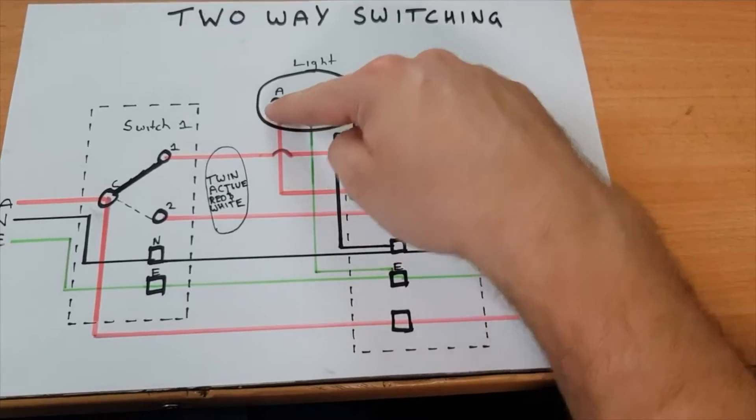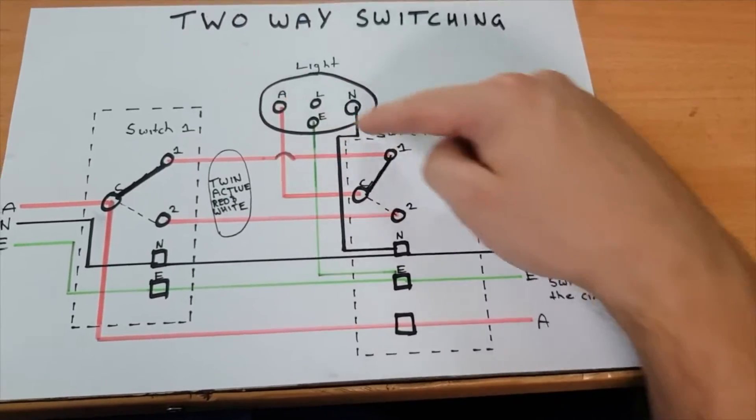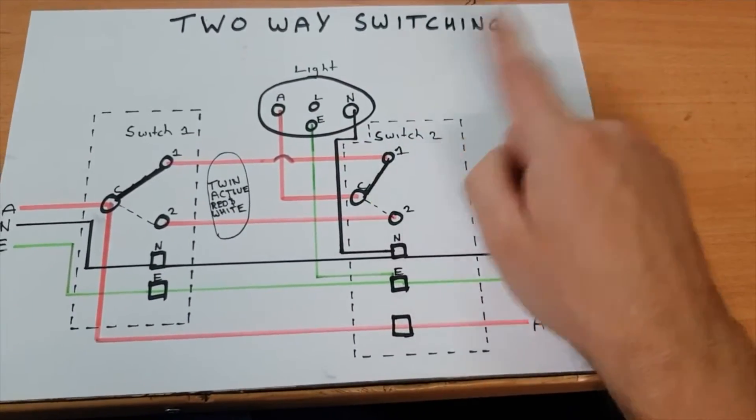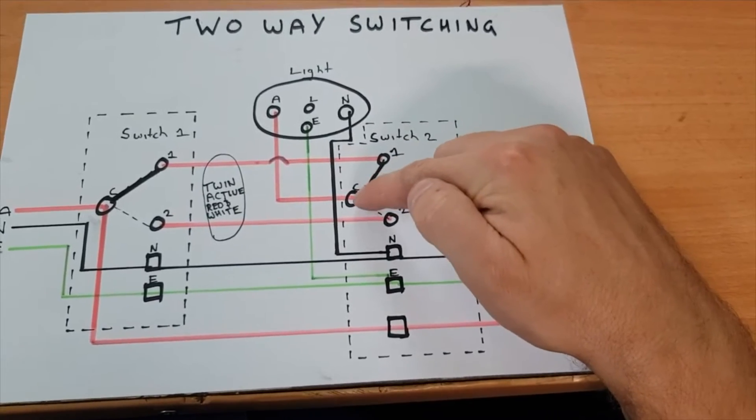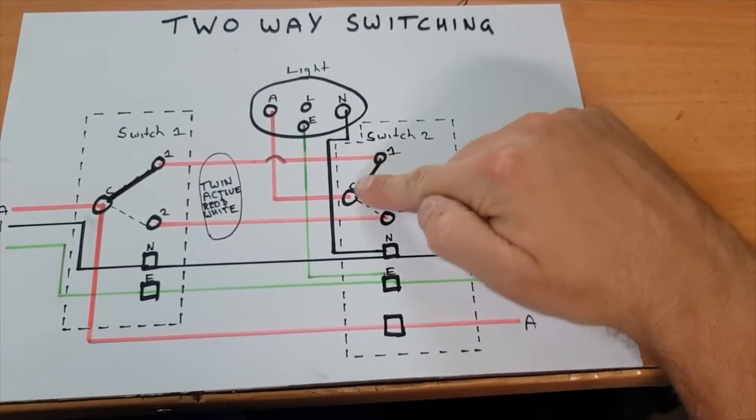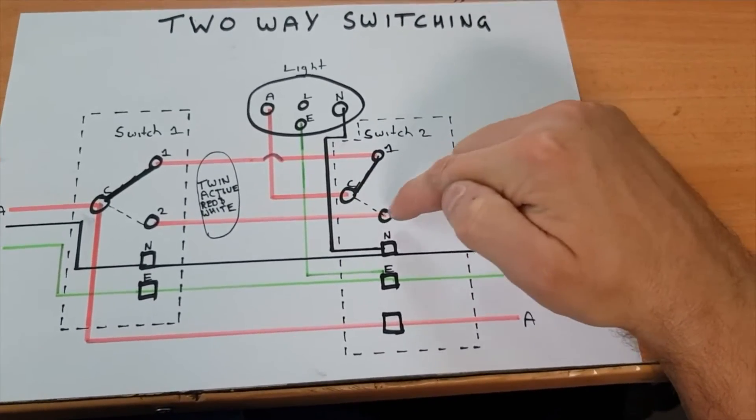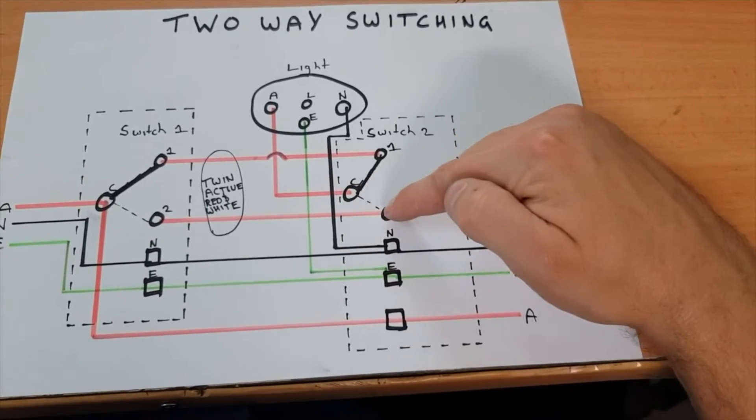With this switch, if you flicked it off, that means this bar will move and disappear and it'll become this dotted line. So it'll be switching between the common and the two.